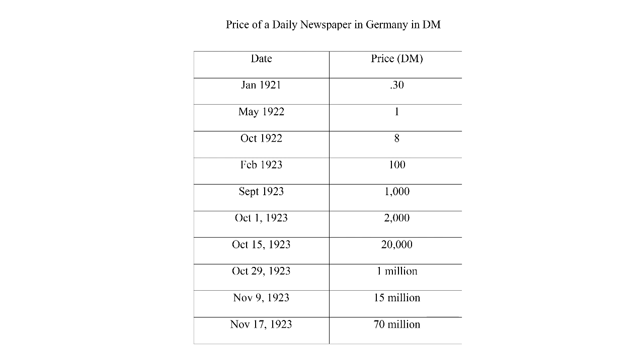From February to September, prices went to $1,000, then $2,000 in one month. In 15 days it went to $20,000. So a newspaper was 2,000 marks at the beginning of the month, 20,000 in the middle, 1,000,000 at the end of the month, 15,000,000 two weeks later, then 70,000,000. At that point, the German government stopped the inflation, called in the notes, and for every 1,000,000,000 marks you had, you got one new mark, which they claimed was backed up by land.